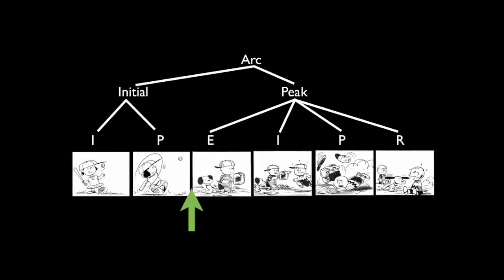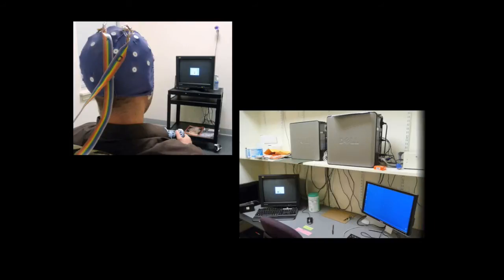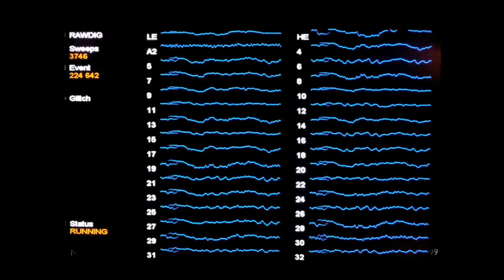Similarly, we placed white disruption panels either within the groupings of sequential images or between them. Participants then viewed these sequences one panel at a time while we measured the electrical activity of their brains.